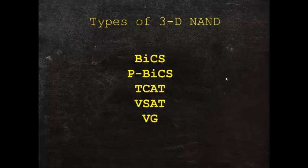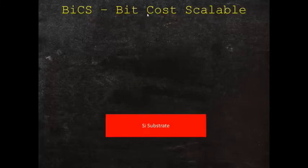There are basically five types of NAND architectures: the BICS, the PBICS or PIPE-BICS, TCAT, VSAT, and the vertical gate or VG. I'll talk about what each one of these means as we go through. First, we'll start with BICS, which is the BIT cost-scalable design.